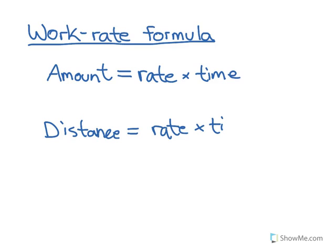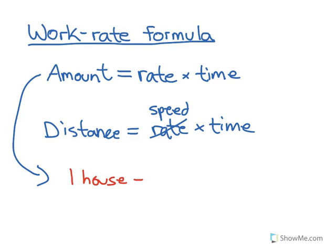But we usually don't call it rate, we might call this speed for the distance one. So when we're doing those ones where it takes a certain person X amount of hours to complete one house, the one house would be the amount. So let's say one house equals whatever rate they're going at times, let's say it takes them five hours.